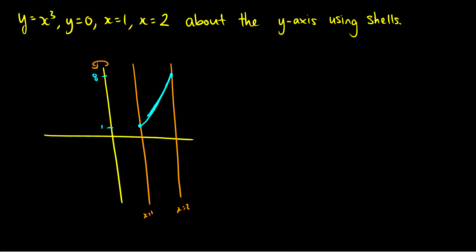We're looking at this shaded area and rotating about the y-axis. It's easier to do shells here because with the disk method we get a different circle for one region and another circle for a different region — we have x = 1 up to a point, then the curve picks up from 1 all the way to 8. We'd also have to integrate around the y-axis and change our formulas, so the shell method is just faster here.